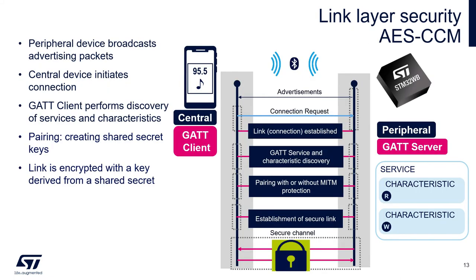Let's now look at how to establish a secure link over BLE. There are two devices: an STM32WB acting as a BLE peripheral and GATT server, exposing two characteristics — one that can be read and one that can be written — and a mobile phone acting as a BLE central and GATT client. The procedure starts with the peripheral advertising its presence. The central scans, detects these packets, and sends a connection request. Then the central performs service and characteristic discovery, and may initiate pairing — the establishment of a shared secret between the two devices. This shared secret is later used to derive a session key for link encryption.